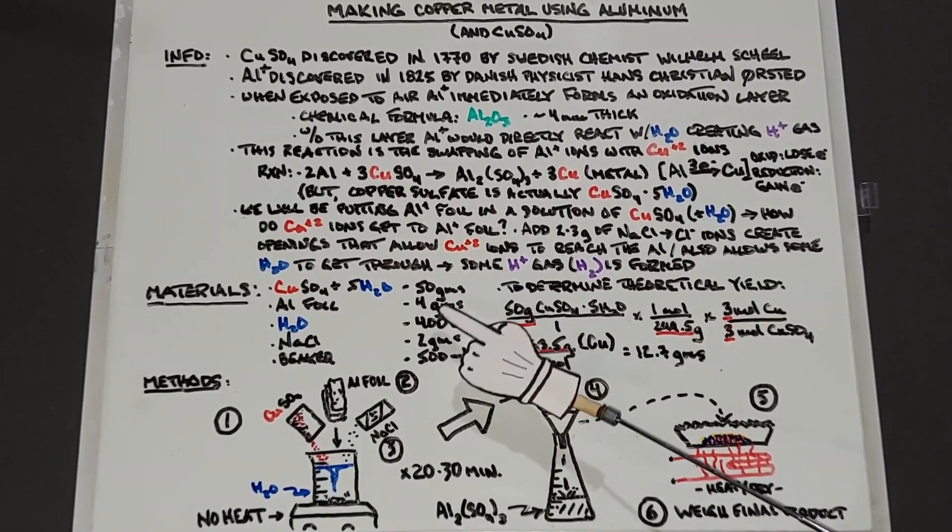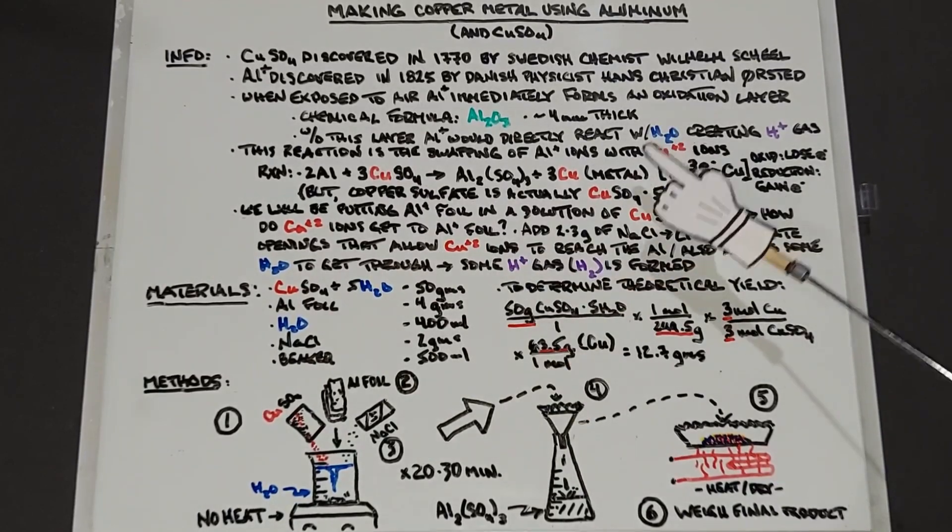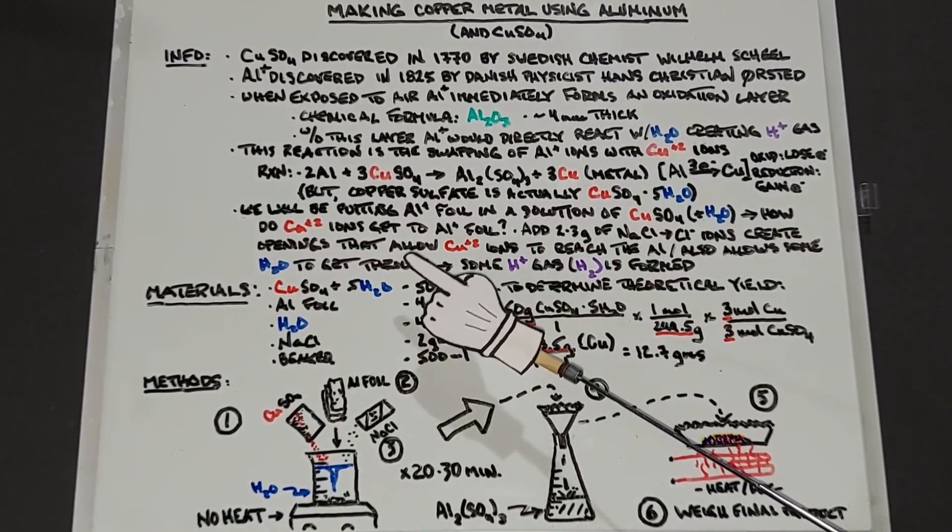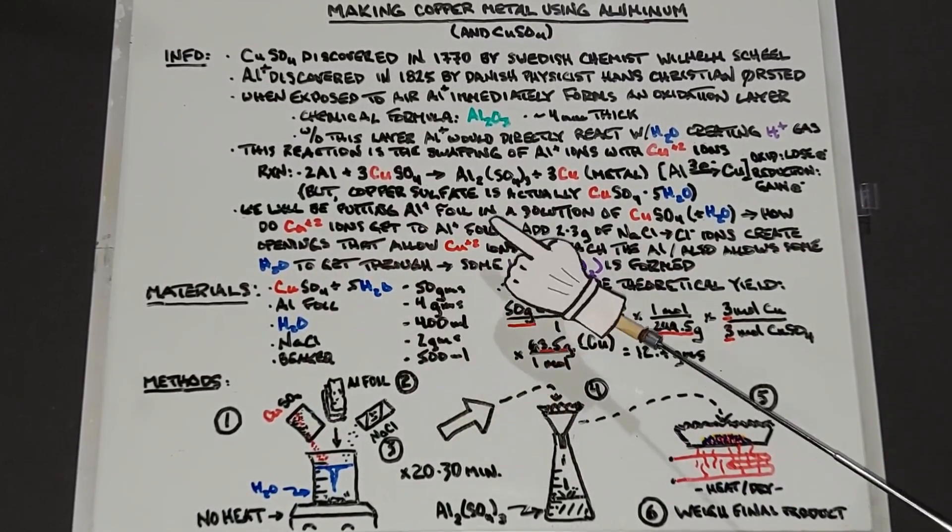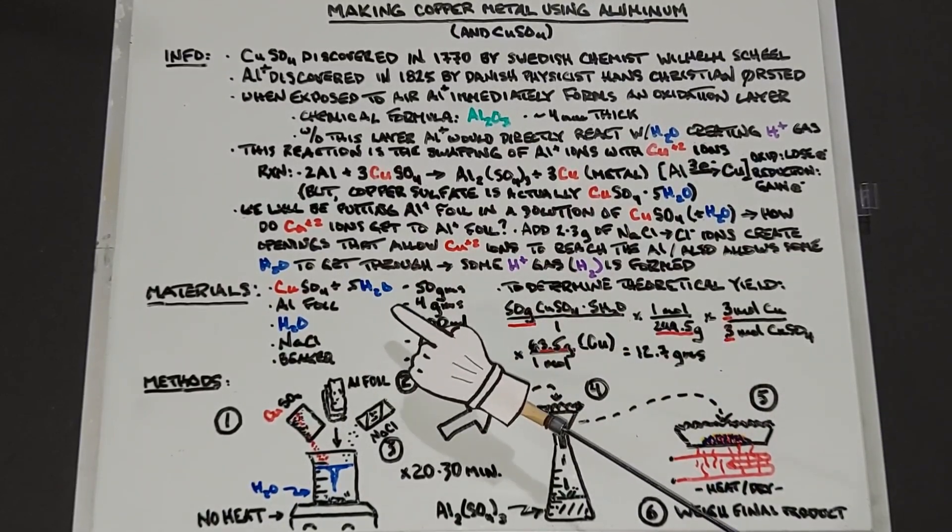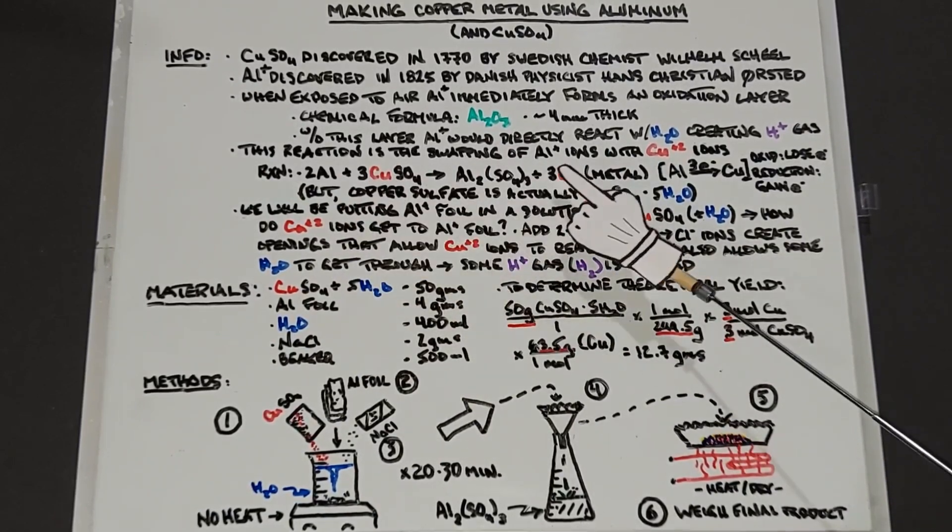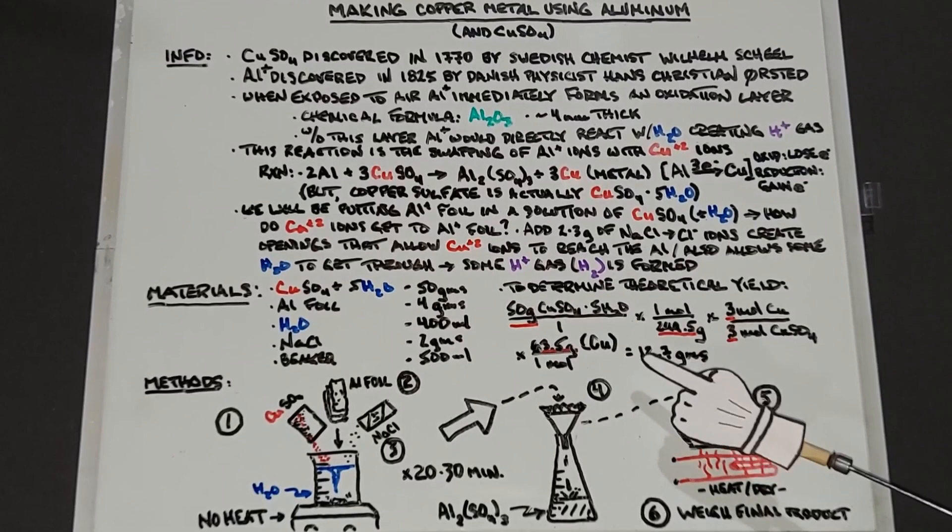We'll need water 400 milliliters, sodium chloride 2 grams, and a beaker of 500 milliliters. Now that we know the amounts of each one that we're using, I was talking about the molar mass when working with copper sulfate pentahydrate, so we're going to determine what the theoretical yield is.